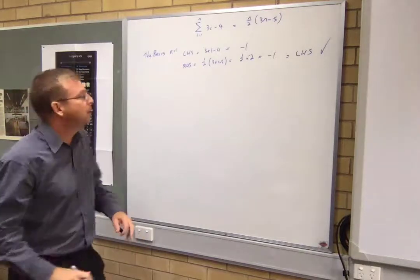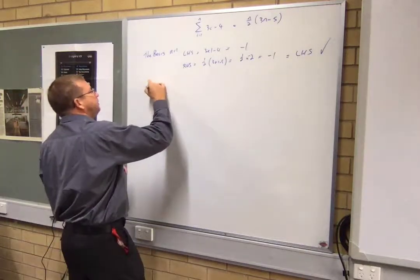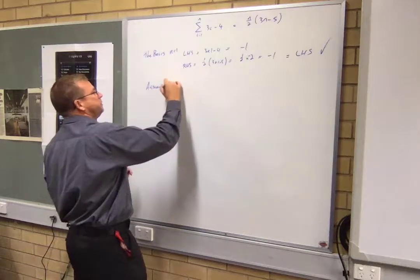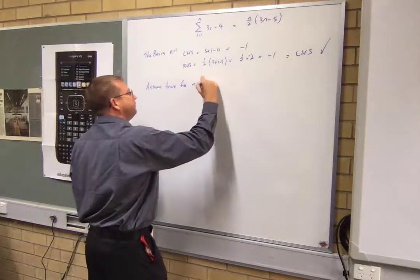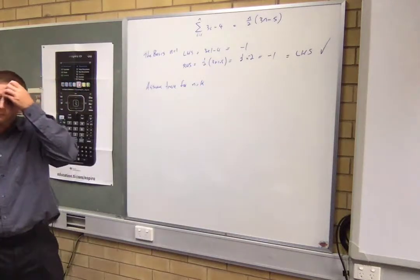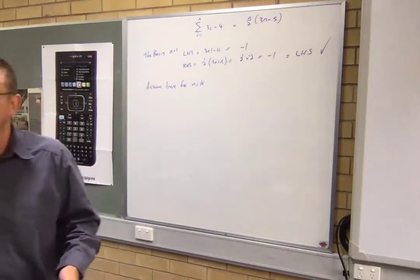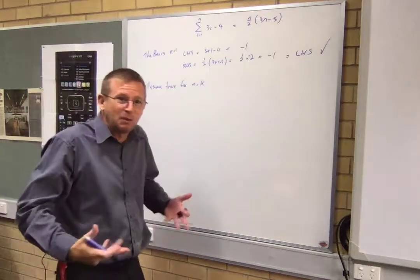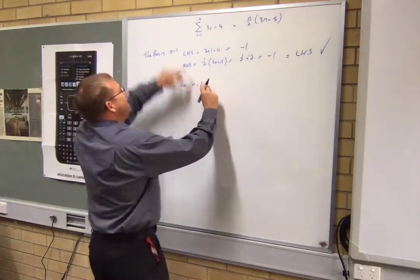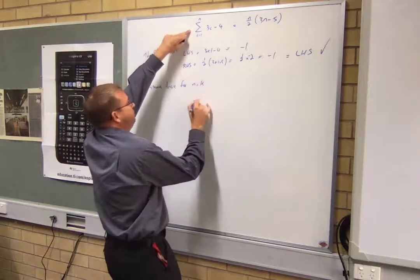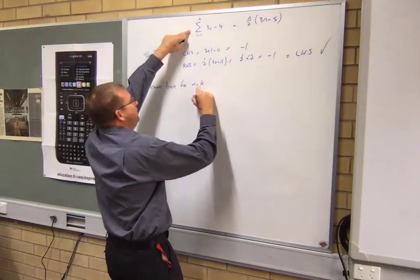So we can say that that equals the left hand side, so the right hand side equals the left hand side, so we've proved that that's true for n equals one. Done. We're going to assume it's true for n equals k. That's a big assumption, isn't it? But that's okay. That's what we're, this, it relies on that assumption.